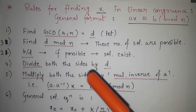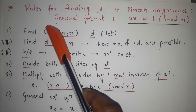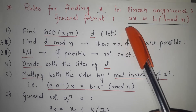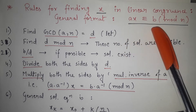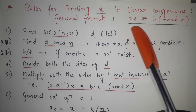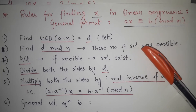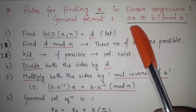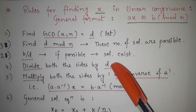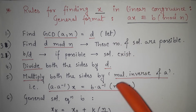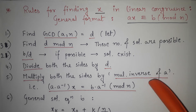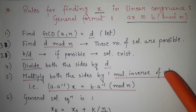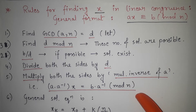Hello everyone. In the previous video, I told you the rules for finding x when a linear congruence equation is given. The general equation we discussed is ax ≡ b (mod n). In this video, we are not going to repeat those steps again since I already explained them in the previous video. If you haven't watched that yet, the link will be in the description section.